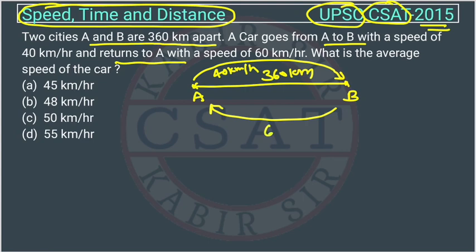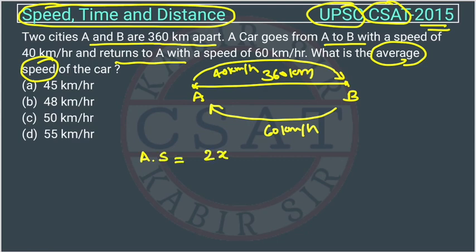What is the average speed of the car? We know that the average speed of the car will be equal to 2xy divided by x plus y. This is a formula where x and y are the two speeds — x being 40 km/h and y being the second speed.